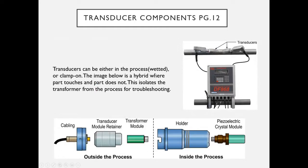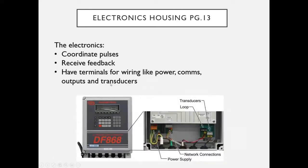Transducers can either be in-process (wetted, touching the process) or clamp-on (on the outside of the pipe). There is also a hybrid configuration where a holder is permanently and wetted to the piping system while the transducer module and cabling are quick-connected for easy servicing. The electronics housing coordinates pulses and input signals, receives feedback from sensors, and contains terminals, displays, and all communications, power output, and configuration functions.